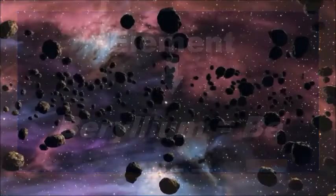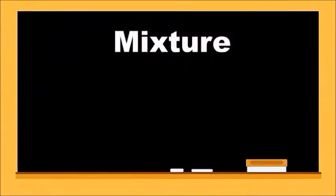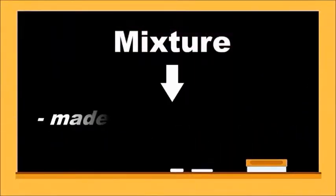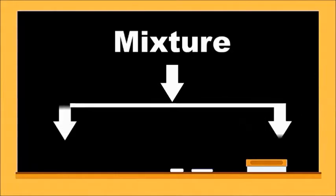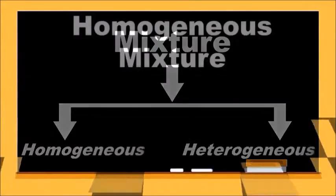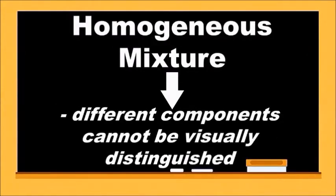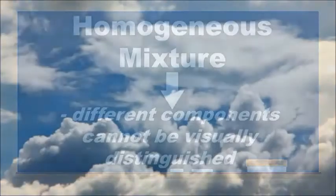Moving on to the other classification of matter, a mixture is made up of two or more substances in which the substances retain their distinct identities. These substances are mixed but not chemically combined. Mixtures are either homogeneous or heterogeneous. A homogeneous mixture is a mixture of two or more chemical substances where different components cannot be visually distinguished and has a uniform composition.